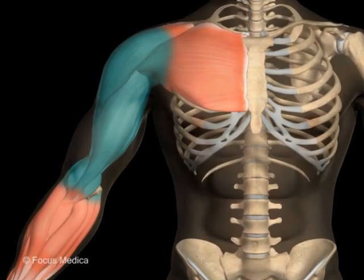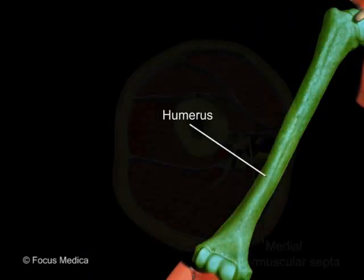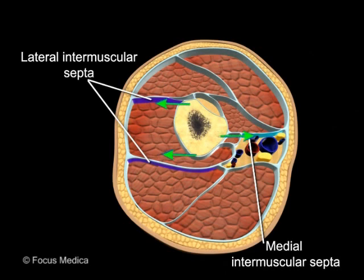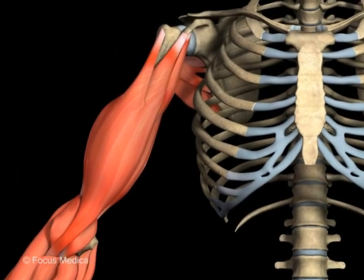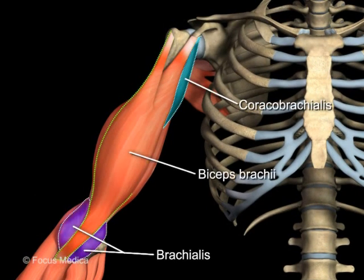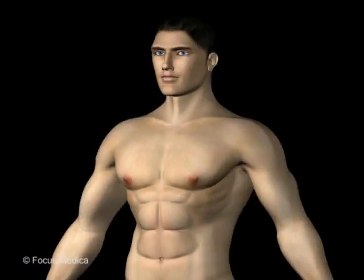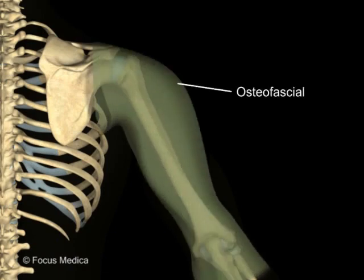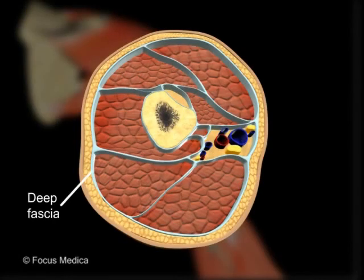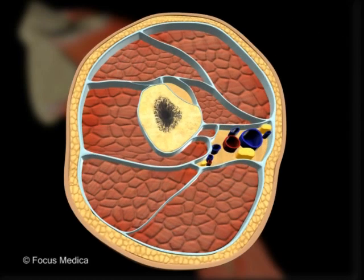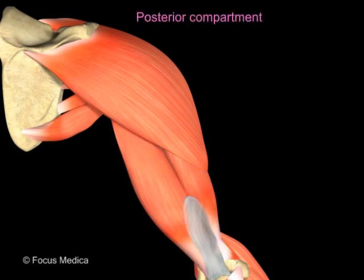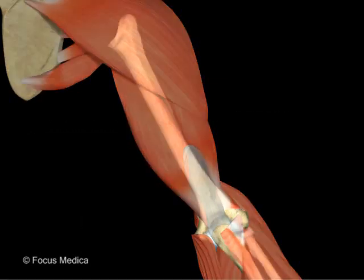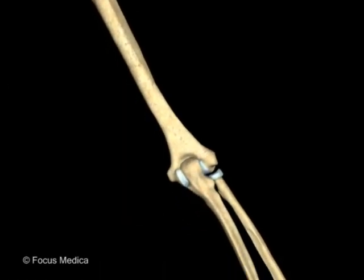The anterior compartment of the arm is the part of the arm that lies in front of the humerus. The medial and lateral intermuscular septa extend on either side of the humerus, separating this compartment from the posterior compartment, and the investing layer of deep fascia wraps it all around. The main muscles of this compartment are the coracobrachialis, the brachialis, and the biceps brachii. The posterior compartment of the arm is an osteofascial compartment located behind the humerus. The triceps muscle is its principal content, arising from three heads and inserting into the olecranon process of the ulna. It is an extensor of the elbow joint.